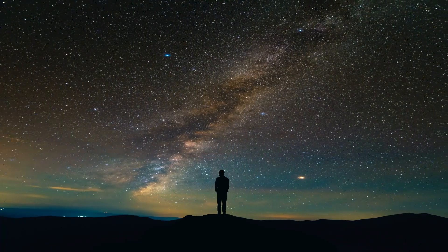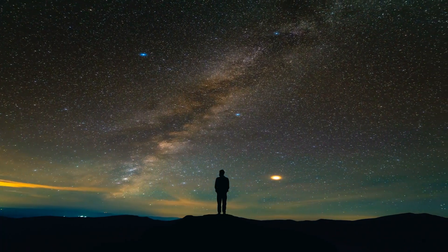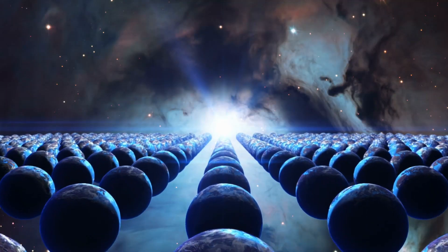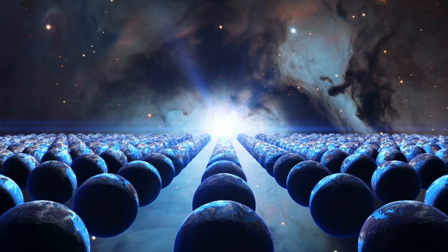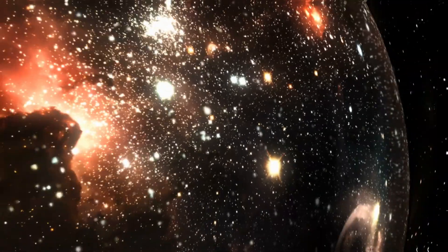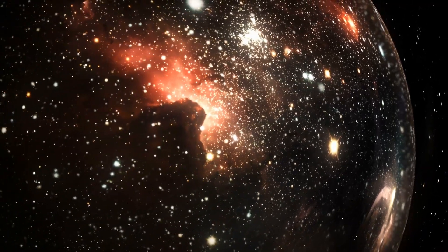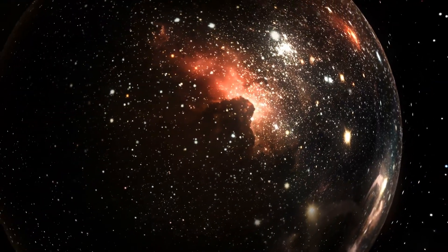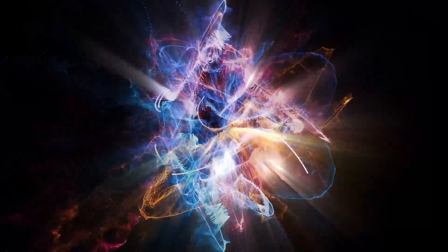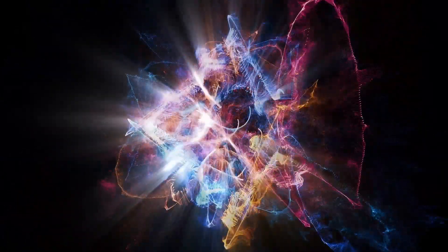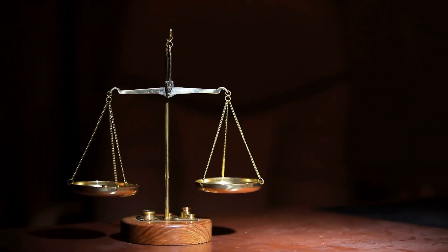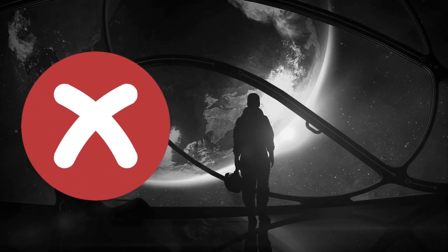Modern scientists are still trying to figure out why the universe exists as it does. According to current theories, when the universe was born, it should have created equal amounts of matter and antimatter. But matter and antimatter annihilate each other when they meet, leaving behind only energy. If they had been perfectly balanced, there wouldn't be stars, planets, or people. There'd be nothing.